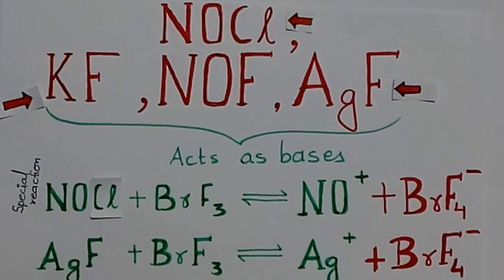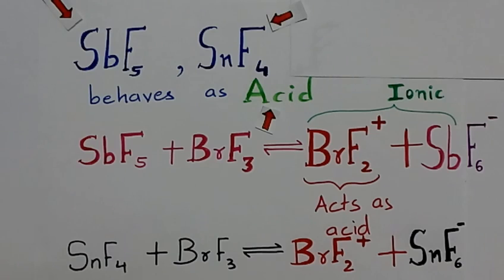All of these compounds, especially AgF and NOCl, act as a base in BrF3. Compounds like SbF5, SnF4 are fluoride ion acceptors. Therefore, increasing the concentration of BrF2+ and hence acts as acid.